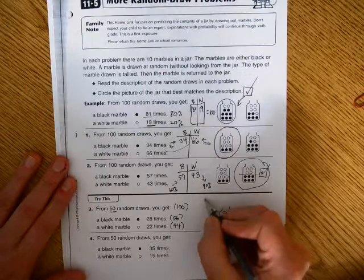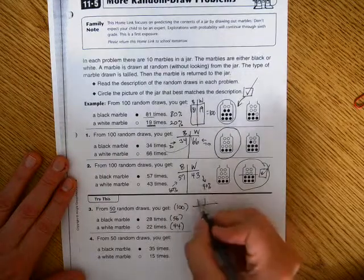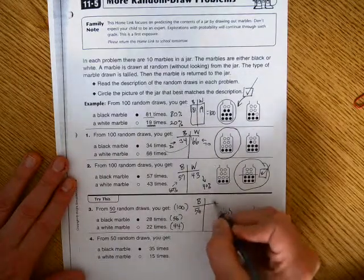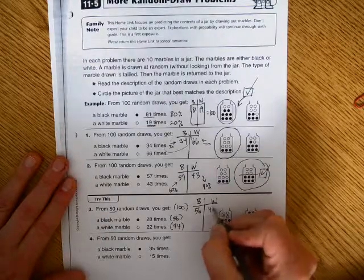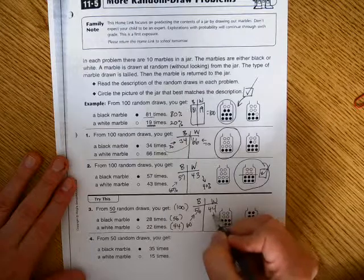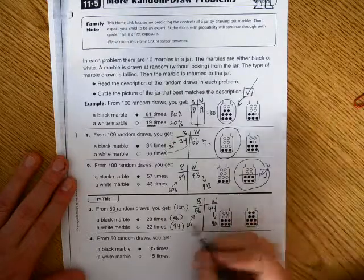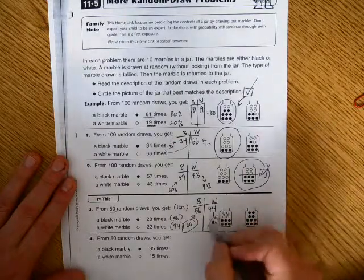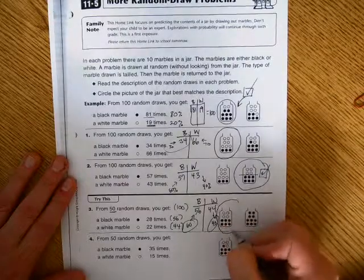So, black makes 56, white makes 44. We can round this up to 60, we can round this down to 40, and I would expect black would have 60% and white would have 40%. This is the answer.